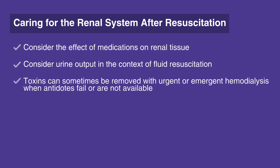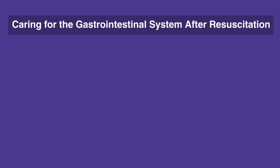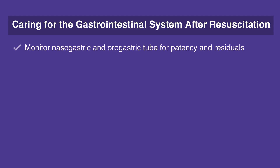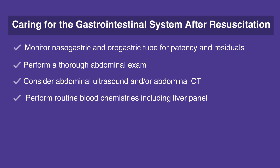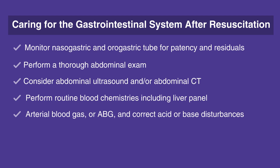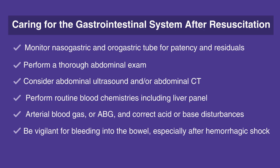Toxins can sometimes be removed with urgent or emergent hemodialysis when antidotes fail or are not available. When caring for the gastrointestinal system after resuscitation, follow this checklist. Monitor nasogastric, or NG, and orogastric, or OG, tube for patency and residuals. Perform a thorough abdominal exam. A tense abdomen may indicate bowel perforation or hemorrhage. Consider abdominal ultrasound and/or abdominal CT. Perform routine blood chemistries including liver panel, arterial blood gas, or ABG, and correct acid-base disturbances. Be vigilant for bleeding into the bowel, especially after hemorrhagic shock.